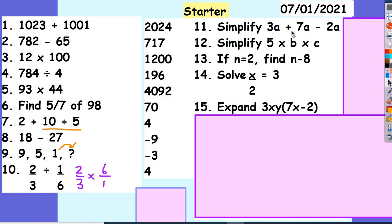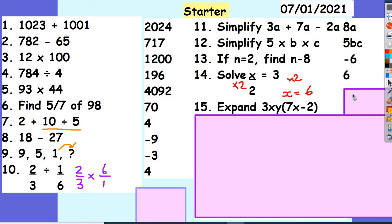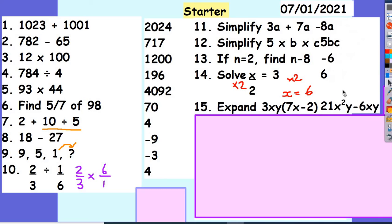Moving on to the algebra section: 3a plus 7a subtract 2a — 3a plus 7a gives me 10a, and 10a take away 2a leaves me with 8a. If I've got 5 times b times c, I can write that as 5bc, taking out the multiply signs. If n is 2, then n take away 8 is 2 take away 8, which gives me negative 6. Solving x divided by 2 equals 3 — multiply both sides by 2, so x equals 6. Expanding the bracket: 3 times 7 gives me 21, x times x gives x squared, multiplied by y, giving 21x squared y take away 6xy. Well done if you got that right.